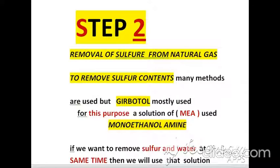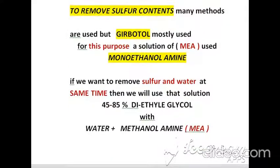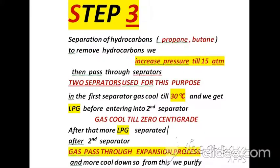Step 2 is removal of sulfur from natural gas. Sulfur contents are removed using different methods, and the Girbotol method is mostly used. In this method, a solution of monoethanolamine is used. If we want to remove sulfur and water at the same time, we use a solution of 45 to 85 percent diethyl glycol with water plus monoethanolamine.